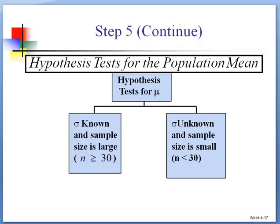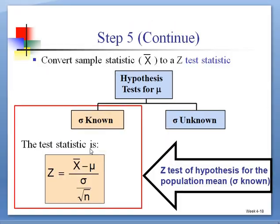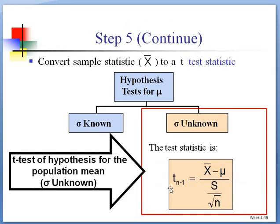If standard deviation is unknown, sample size is small, which means less than 30. Bear in mind, if n equal to 30, we use Z. n is 29 or less, we use T test. The formula is the same. Sample mean minus population mean divide the sample standard deviation.